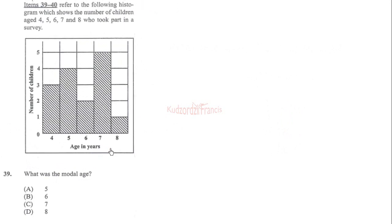Item 39 refers to the following histogram which shows the number of children aged 4, 5, 6, 7, and 8 who took part in a survey. What is the modal age? We look for the bar with the highest height. This is that bar, corresponding to age 7. The modal age is 7.